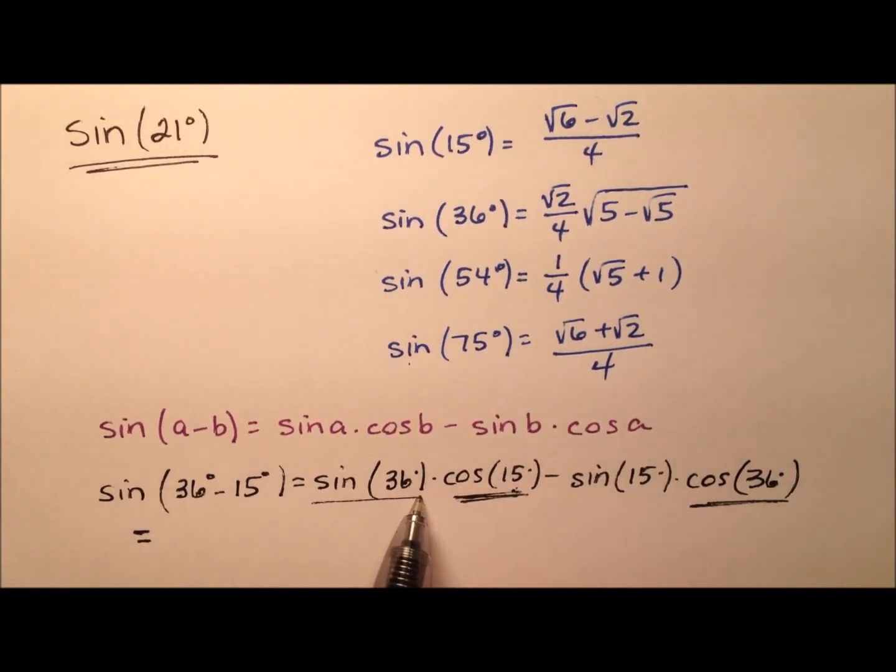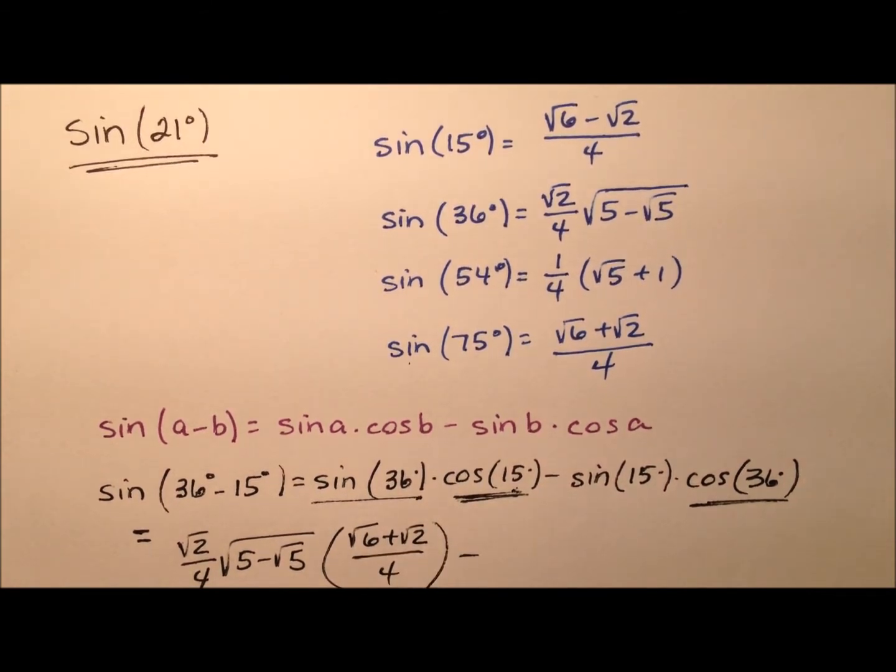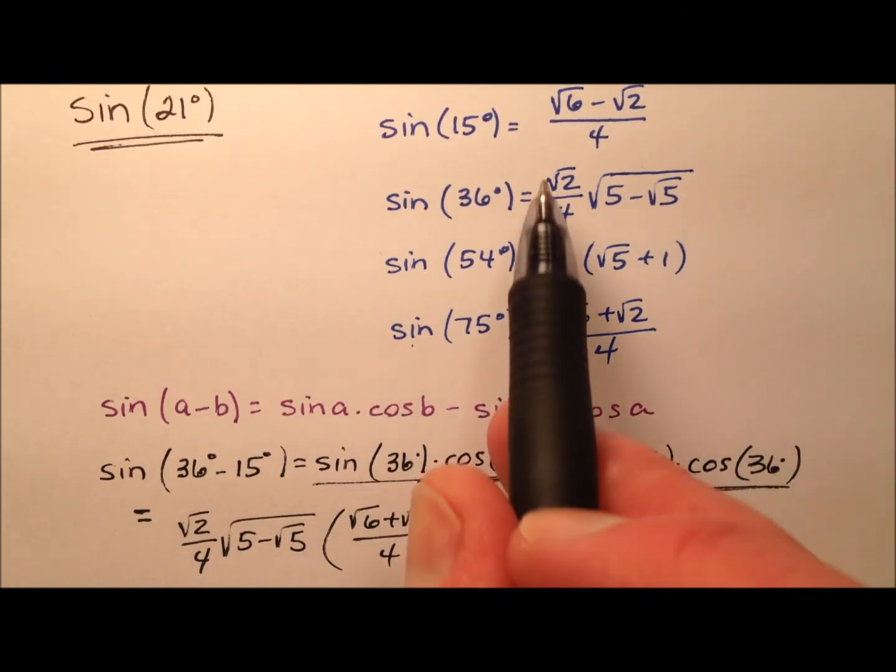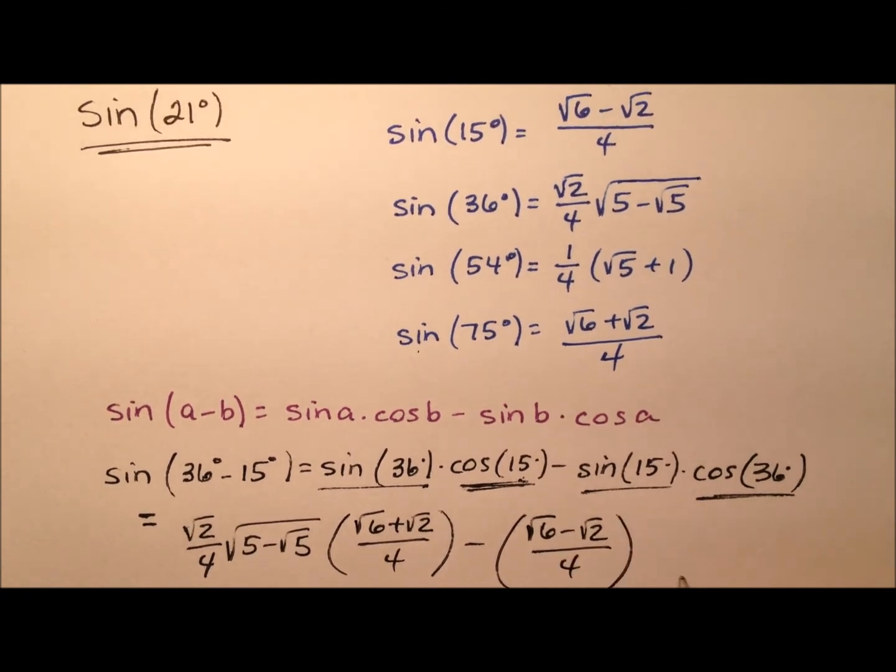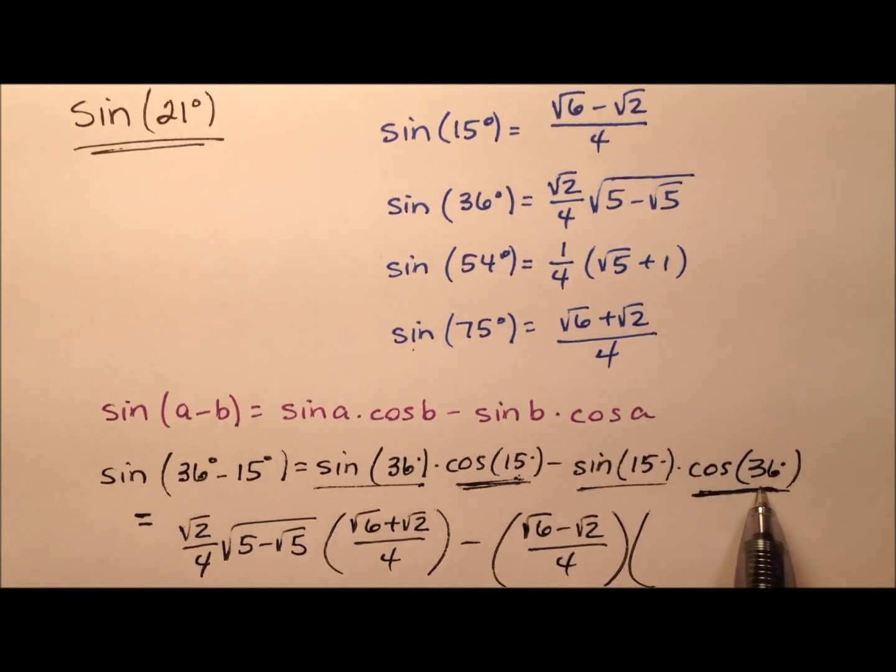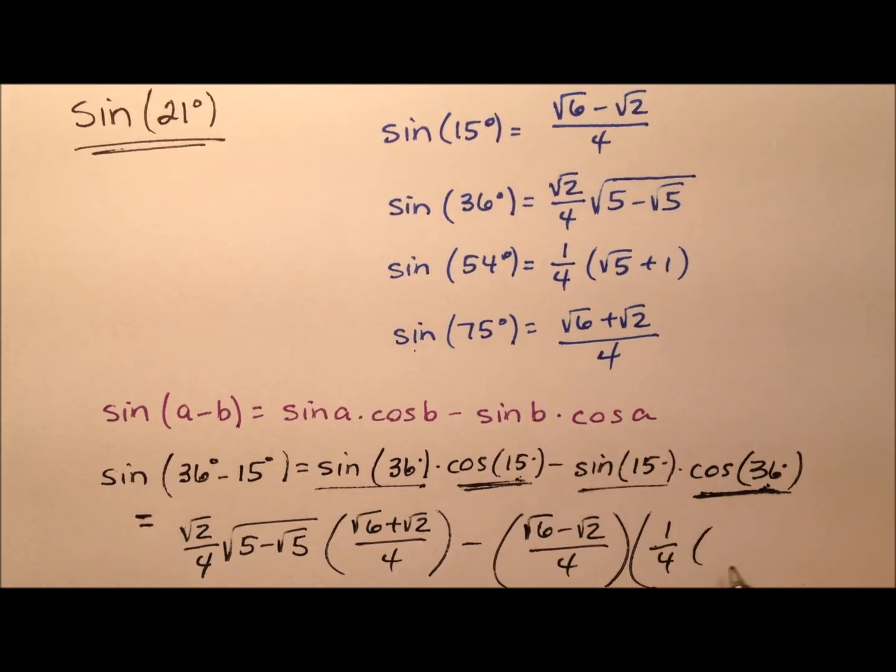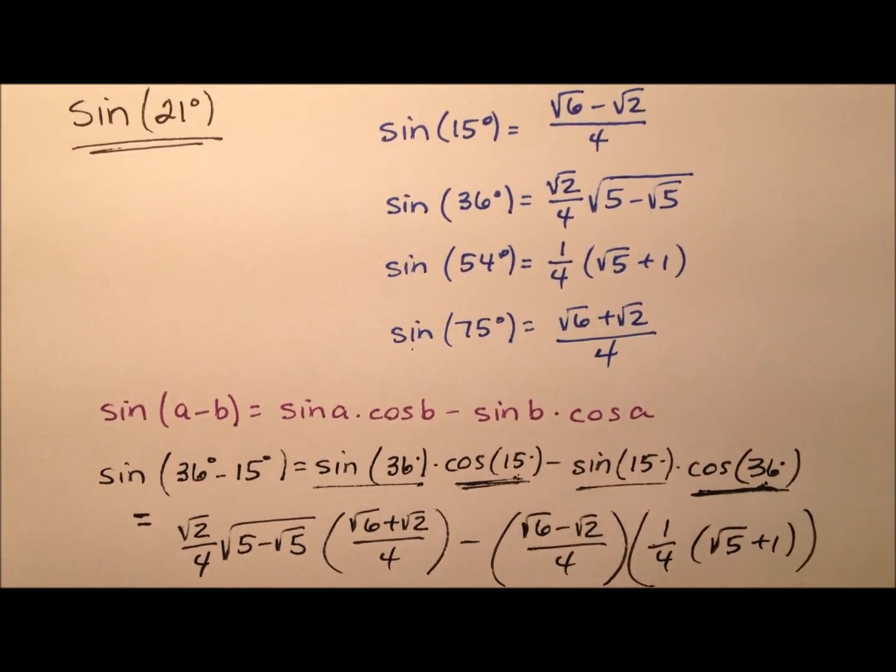So the sine of 36, that's going to be the square root of 2 divided by 4 times this square root expression. And then the cosine of 15 degrees, which I'm going to use the sine of 75, is going to be the square root of 6 plus the square root of 2 over 4. And from that, I'm going to subtract the sine of 15 degrees, which is going to be the square root of 6 minus the square root of 2 over 4, and then multiply that by the cosine of 36. Once again, we're going to change this into a sine and say the sine of 54 because 54 and 36 degrees are complements of one another. So one-fourth times the quantity radical 5 plus 1.